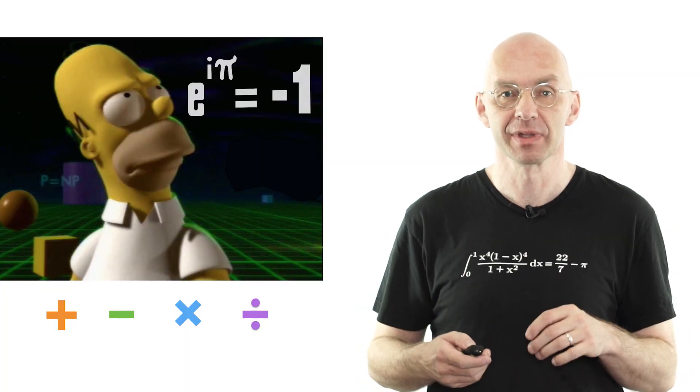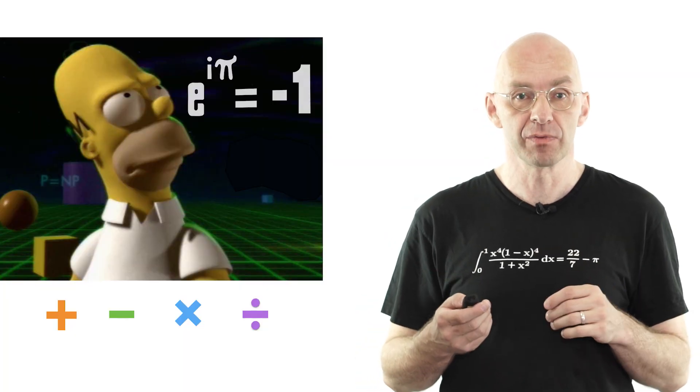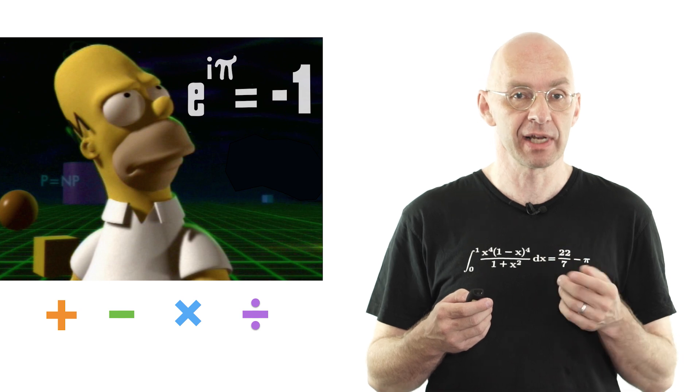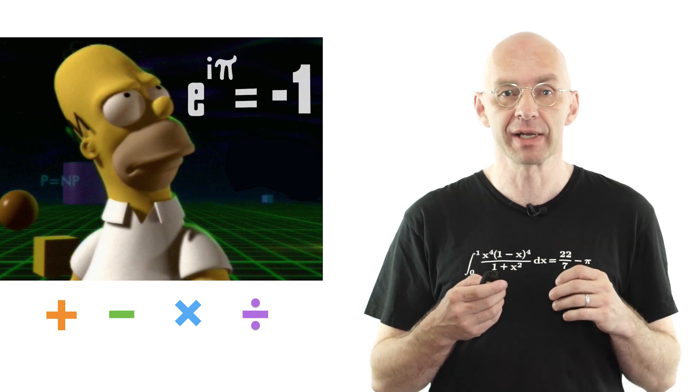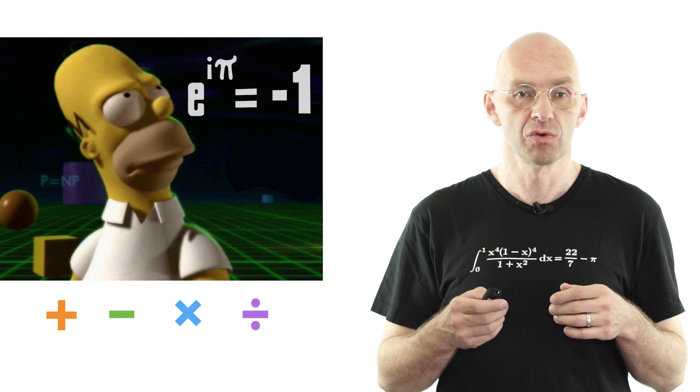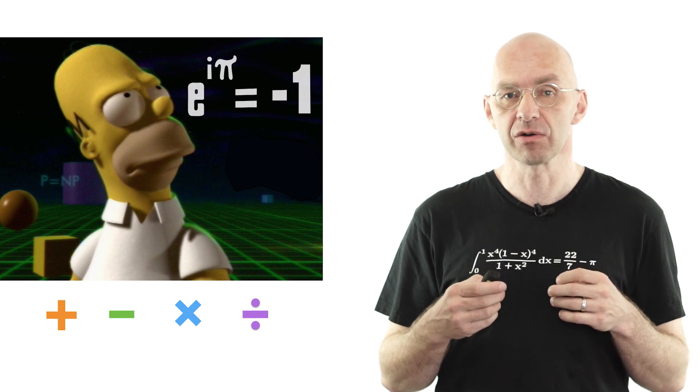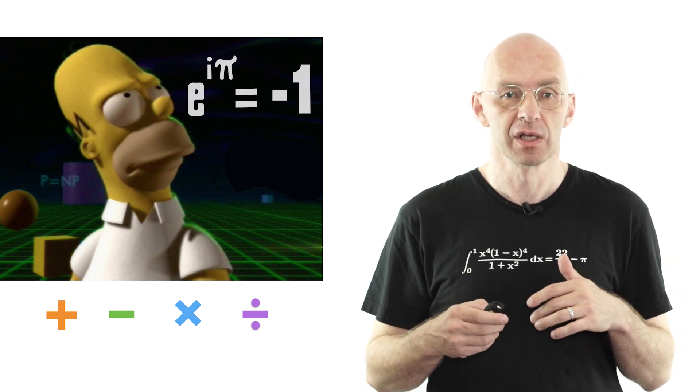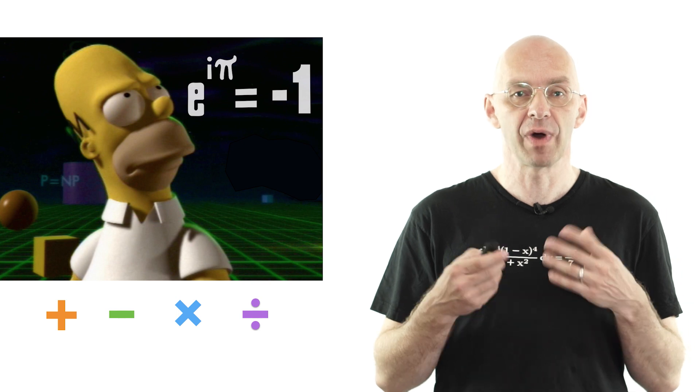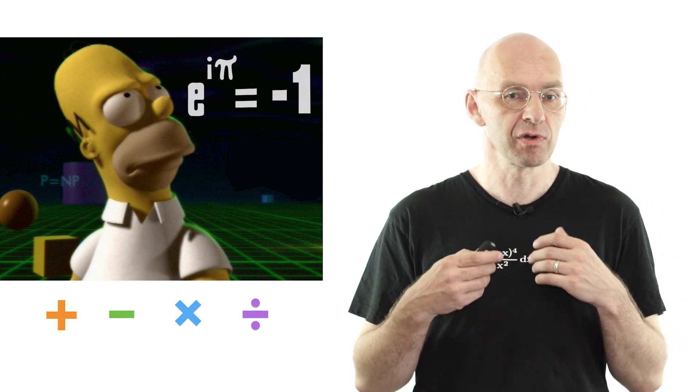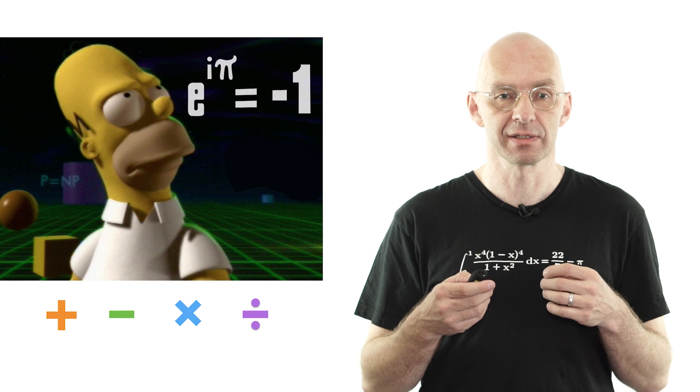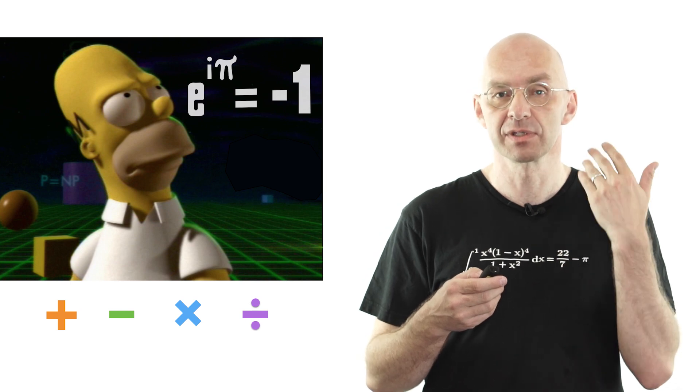Welcome to another Mathologer video. A while ago I did this video in which I wanted to explain the mysterious identity e to the iπ is equal to minus one to Homer Simpson who encountered it in one of the Treehouse of Horror episodes. So my mission was to explain why this identity is true to someone who knows only basic arithmetic: plus, minus, times, divided.